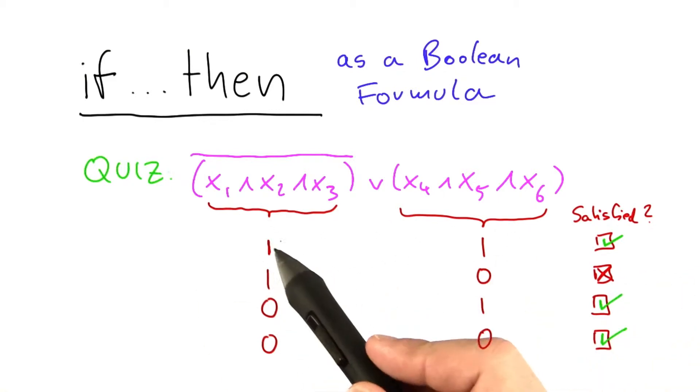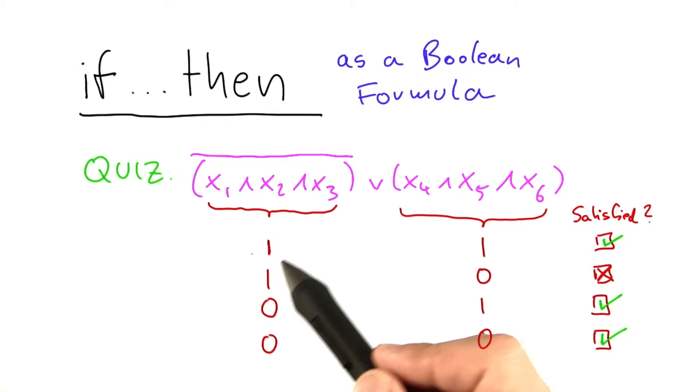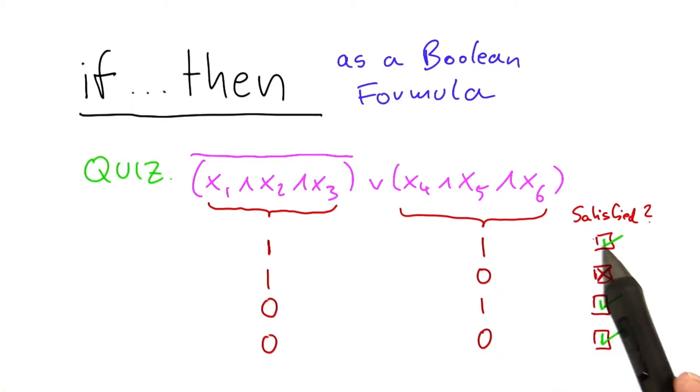And of course, that's easy to evaluate. So if x1 and x2 and x3 evaluates to true, then we have the big not, which will make it go to 0. And 0 or 1 is equal to 1, so the Boolean formula is satisfied. But 0 or 0 evaluates to 0, so here the Boolean formula is not satisfied.